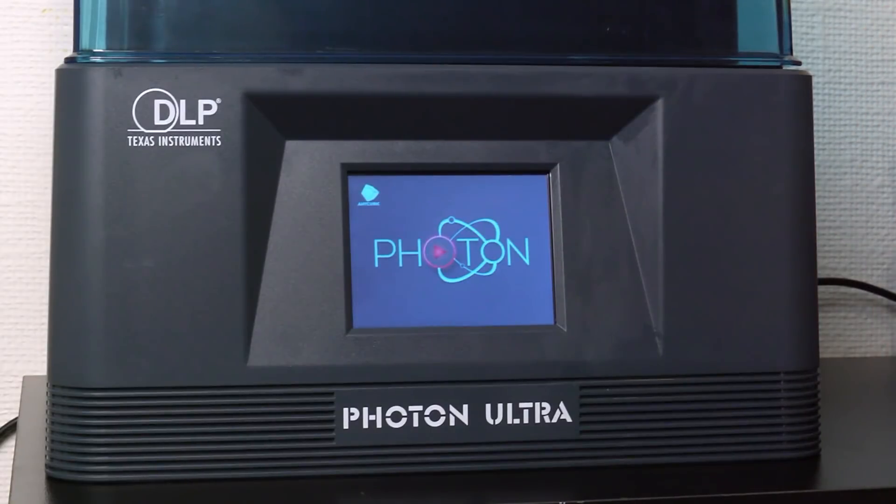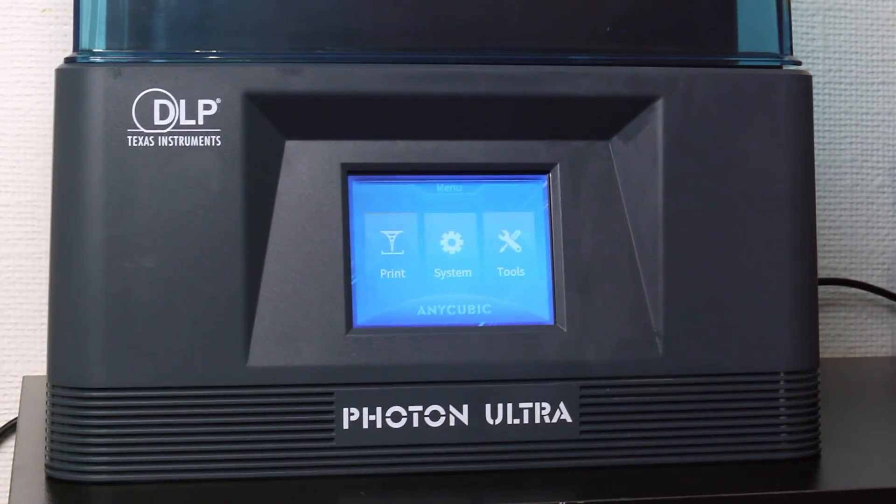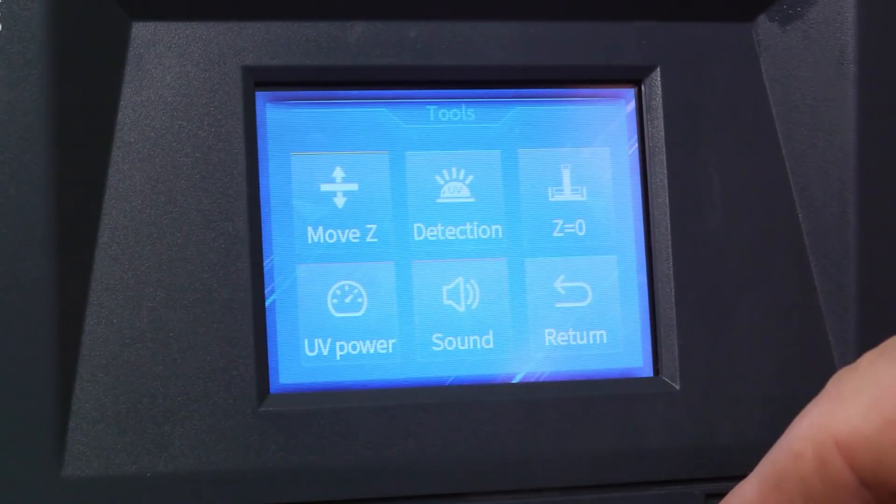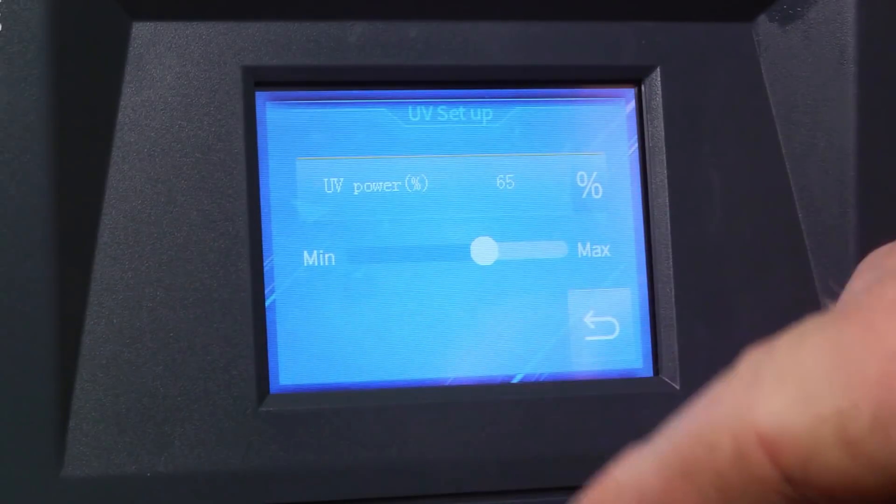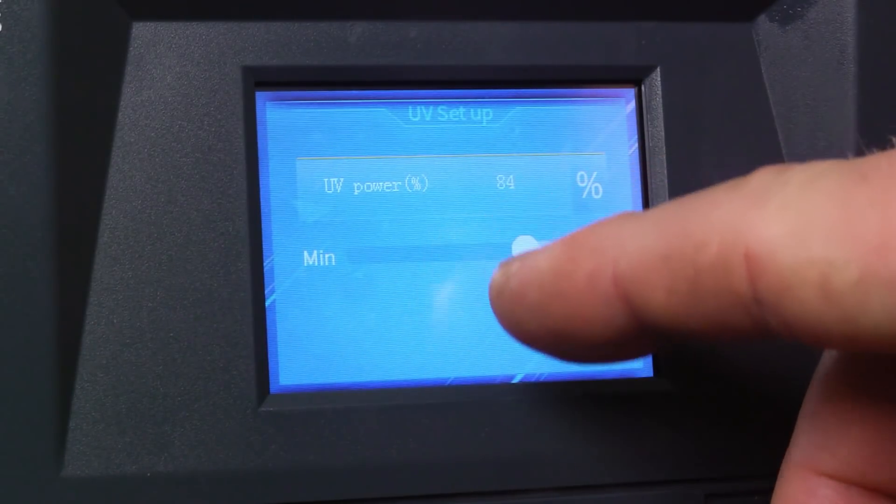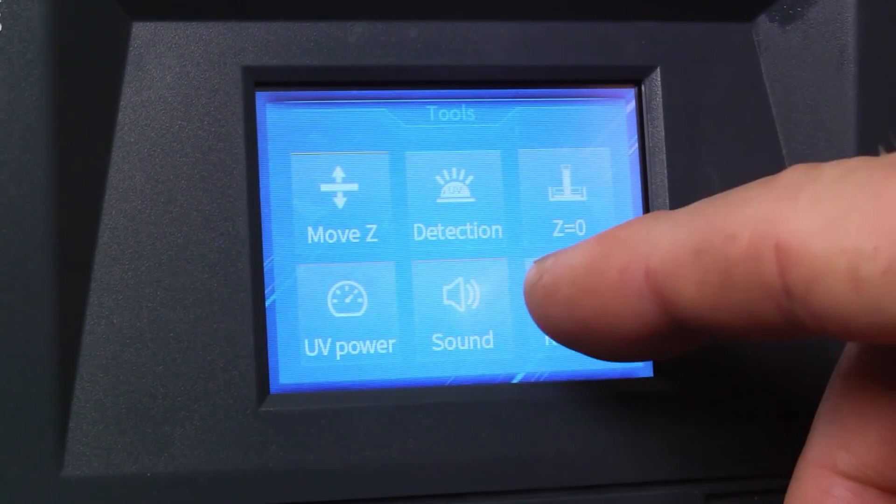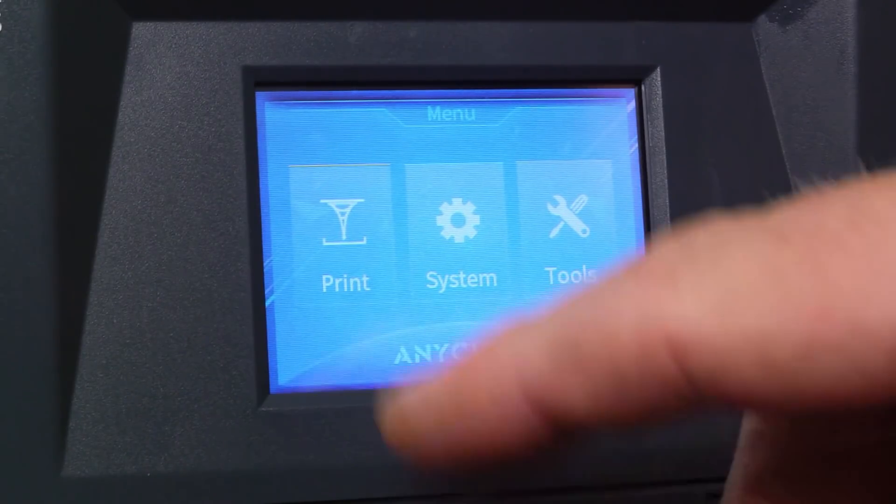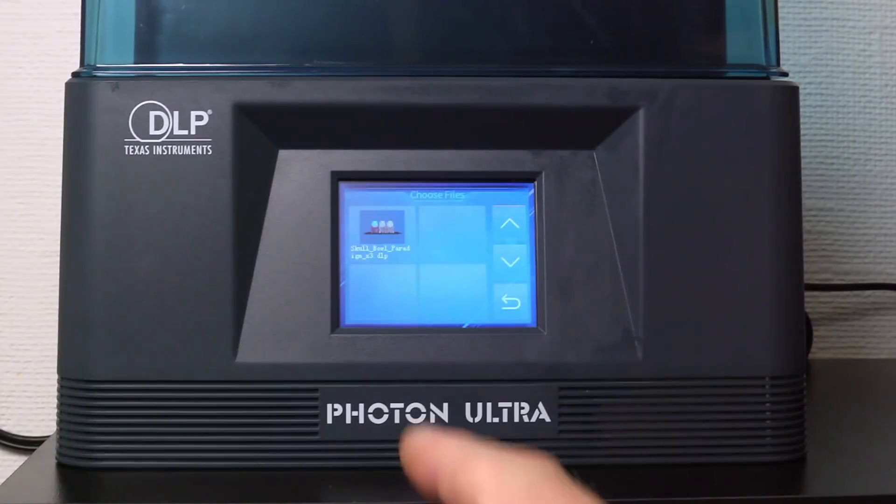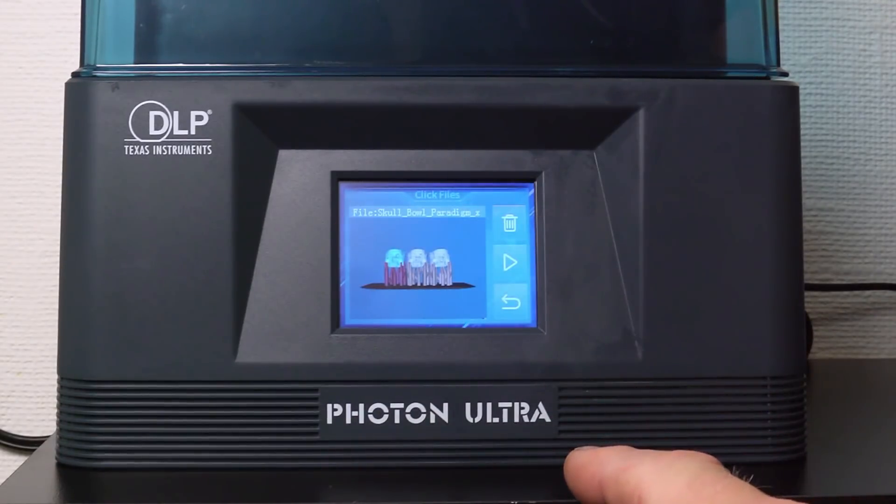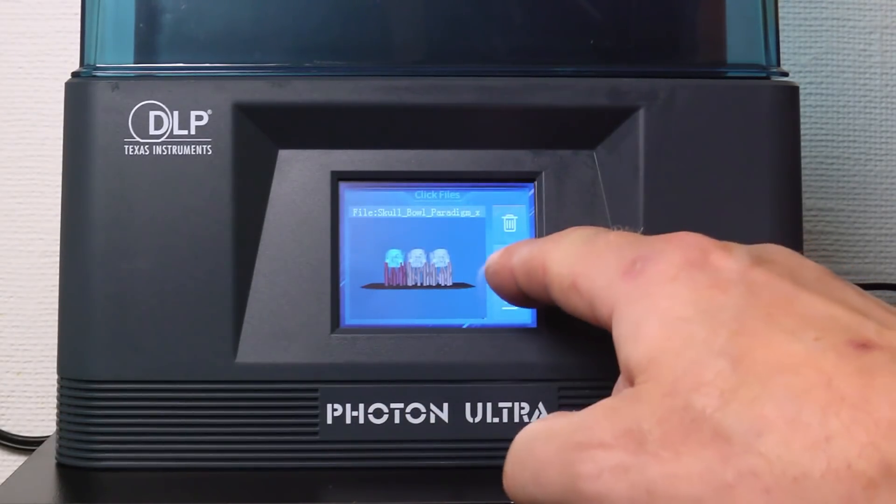This craftsman's resin requires 80% of UV power. So first thing we'll do is to set the UV power to a value around 80. So 84 is fine. We'll go back, choose the print and then this skull set of three skulls will appear and we'll start the print process.